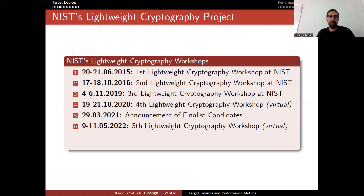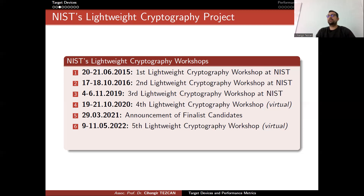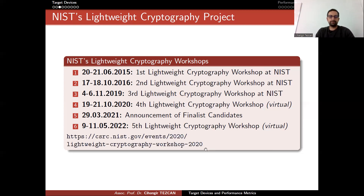We don't know if they are going to select only one finalist or more than one. Industry wants to have a single winner because this way it is easier for standardization. For NIST and for the industry, if there's only one winner, they will only implement that algorithm. But if there are two winners, they have to implement both of them, which is against the main idea behind lightweight cryptography.